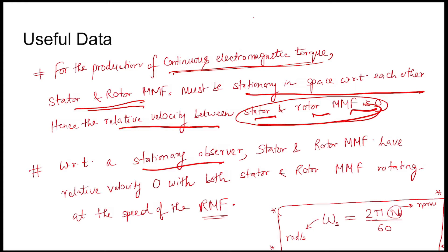With respect to a stationary observer, the stator MMF is rotating at the speed of the rotational magnetic field. The rotor MMF also rotates with the same speed, that is the speed of the RMF, such that the relative velocity between the stator and rotor MMF is zero.